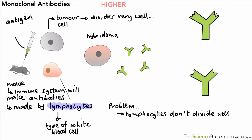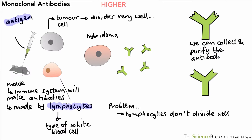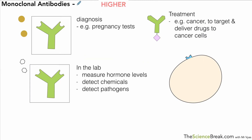On our diagram, here is the hybridoma cell — the cell that can be cloned to make the antibodies we want. By injecting a different antigen into a different mouse, we can produce pretty much any antibody we want for any chemical or antigen found on the surface of bacteria. We can collect and purify the antibody for use and make as much of it as we want.